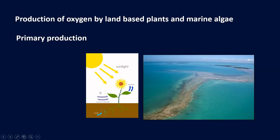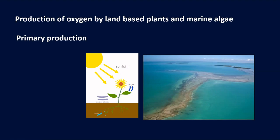Coming to primary production: it involves the capturing of energy from the sun by plants and using this to convert carbon dioxide into organic compounds through photosynthesis. This phenomenon of primary production provides food for all other species on the planet. That is why plants are called producers in an ecosystem. This is also part of the carbon cycle, which is being unbalanced by the release of carbon dioxide through the burning of fossil fuels.